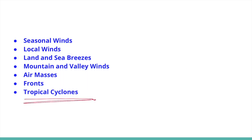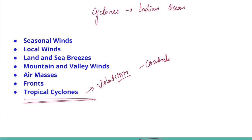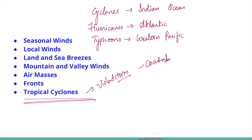Tropical cyclones are violent storms that originate over oceans in tropical areas and move over coastal areas, bringing large-scale destruction through violent winds, very heavy rainfall, and storm surges. They are one of the most devastating natural calamities. They are known as cyclones in the Indian Ocean, hurricanes in the Atlantic, typhoons in the western Pacific and South China Sea, and willy-willies in western Australia.